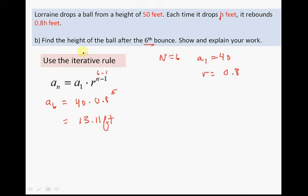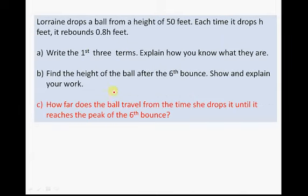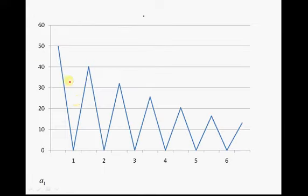So the ball, the height of the ball after the sixth bounce. So here comes, here's the sixth bounce. And it bounces up 13.11 feet after the sixth bounce. Right? Sixth bounce. Okay. Now we take a look at C, right?